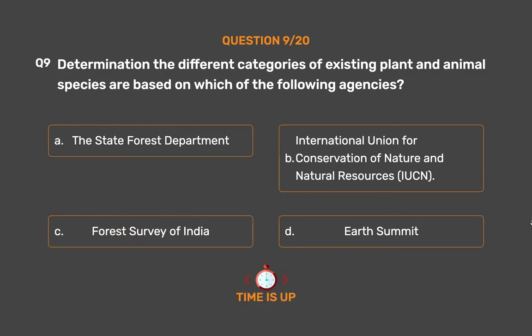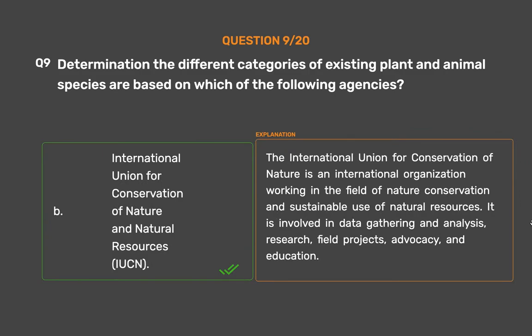The correct answer is Option B: International Union for Conservation of Nature and Natural Resources, IUCN. The IUCN is an international organization working in the field of nature conservation and sustainable use of natural resources. It is involved in data gathering and analysis, research, field projects, advocacy, and education.